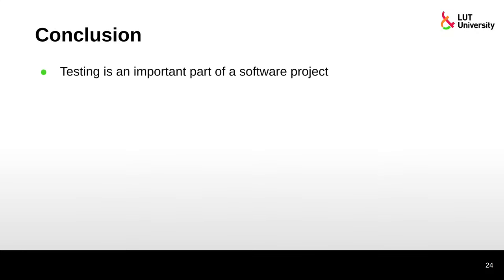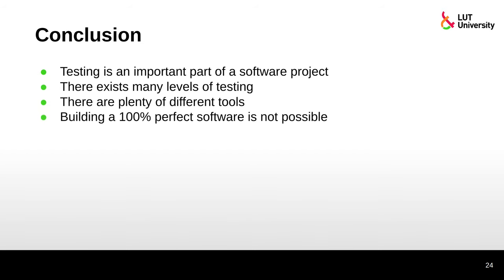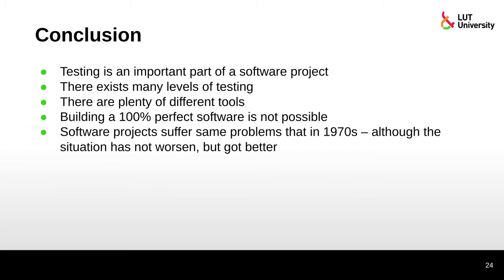Conclusion: Testing is an important part of a software project. There exist many levels of testing and plenty of different tools. Building 100% perfect software is not possible. Software projects still suffer the same problems as in the 1970s, although the situation has improved. We now have many techniques, processes, and tools to test software — and that's a good thing. But there is still plenty of room for improvement.